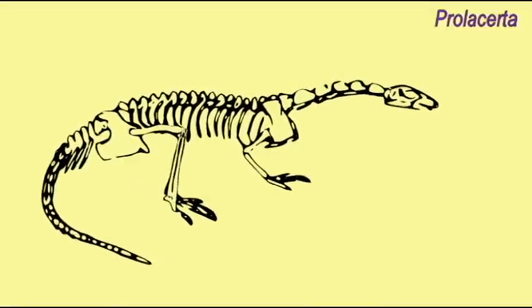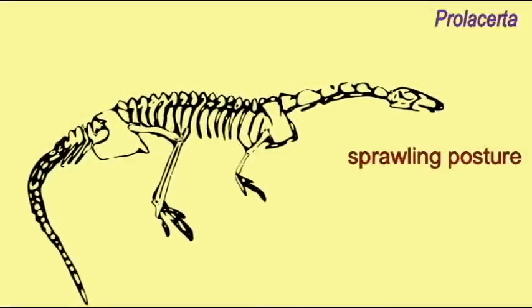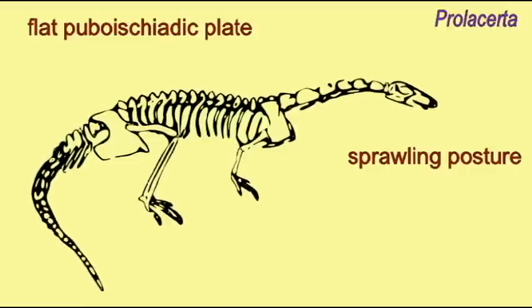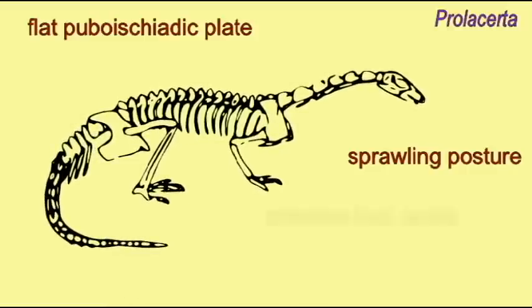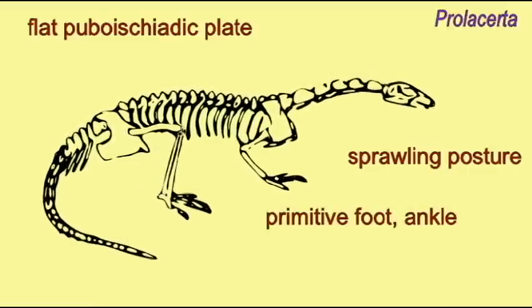There are a number of archosaurs which were known to be bipedal whose legs were much longer than their arms and whose hip sockets were partially open.